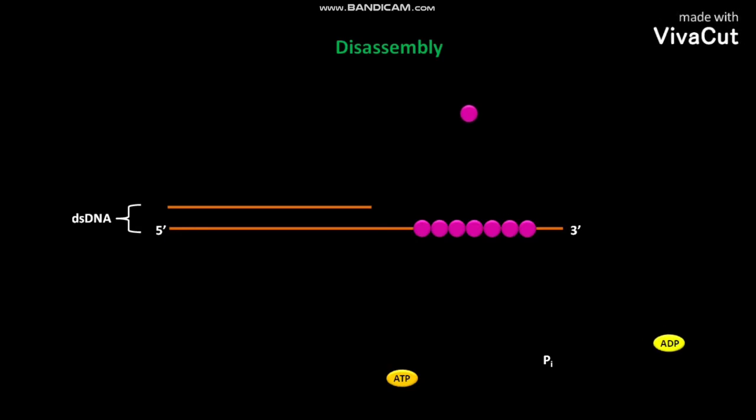This process is repeated for several times. As shown here, the disassembly proceeds in the 5' to 3' direction from the end opposite to that where extension occurs.